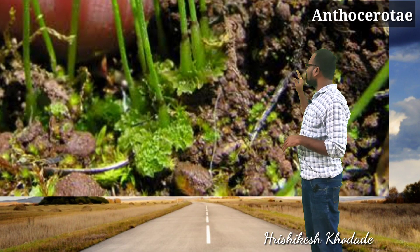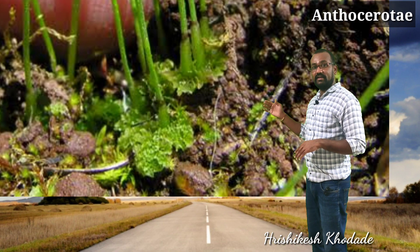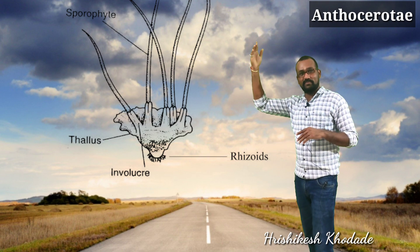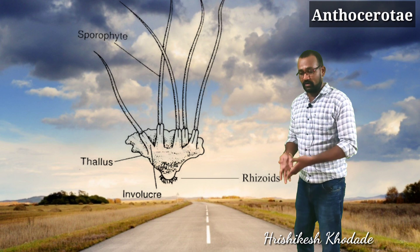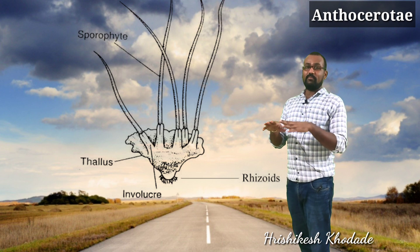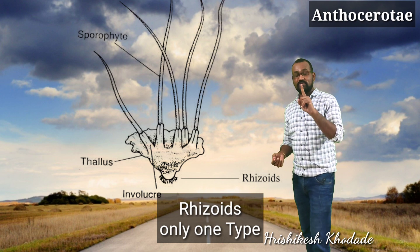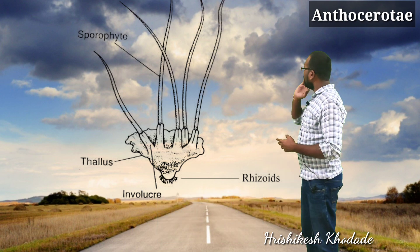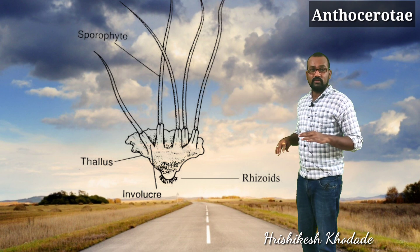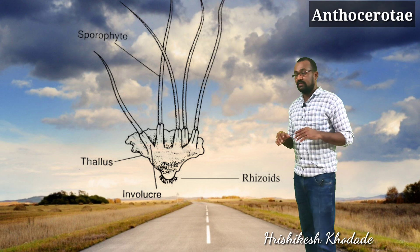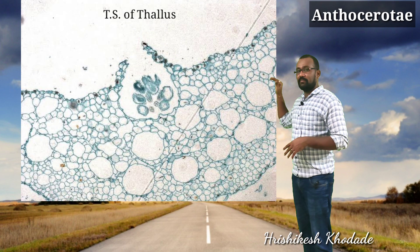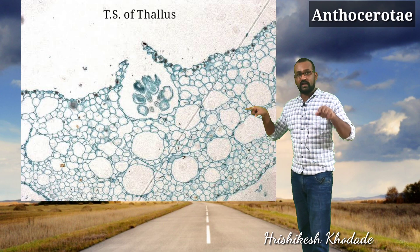Hornworts show a dorsiventrally flat structure. The photograph will help you understand the differences between the bryophyte categories. Hornworts are also flat and contain rhizoids at the lower surface — rhizoids are definitely present on the lower surface only, since they absorb water from the soil. These rhizoids are of only one type: smooth-walled rhizoids. If you examine carefully you will find there are no scales present on this type of bryophyte.